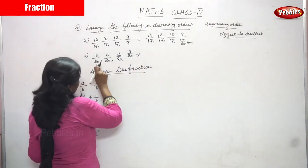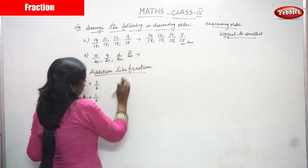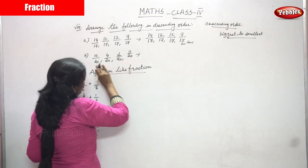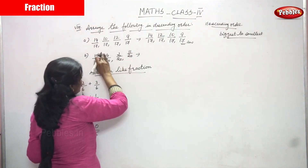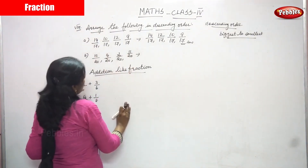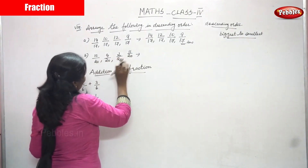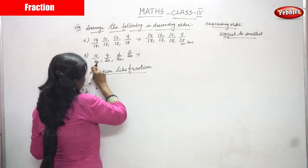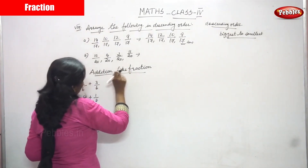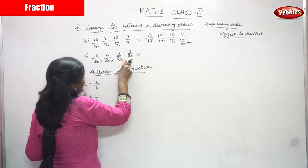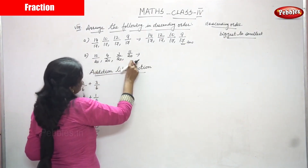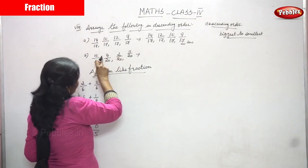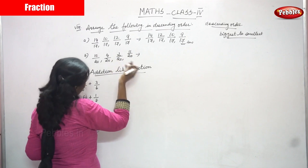Next one: 10 by 20, 4 by 20, 2 by 20, 11 by 20. Look at all the denominators — in this fraction all the denominators are the same. So you have to move on to the next step: look at all the numerators. The numerators are 10, 4, 2, 11 — all the numerators are different.